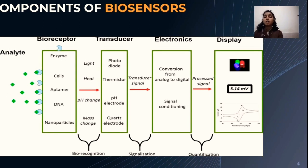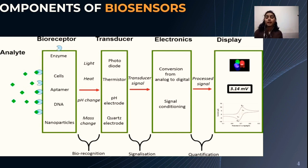The transduced signal is then given to the electronics. Electronics generally consists of complex electronic circuitry that performs amplification and conversion of the signal from analog to digital form. It processes the transduced signal and prepares it for display. Finally, the display shows the output, generally in the form of a numeric value, graphic value, tabular form, or image.